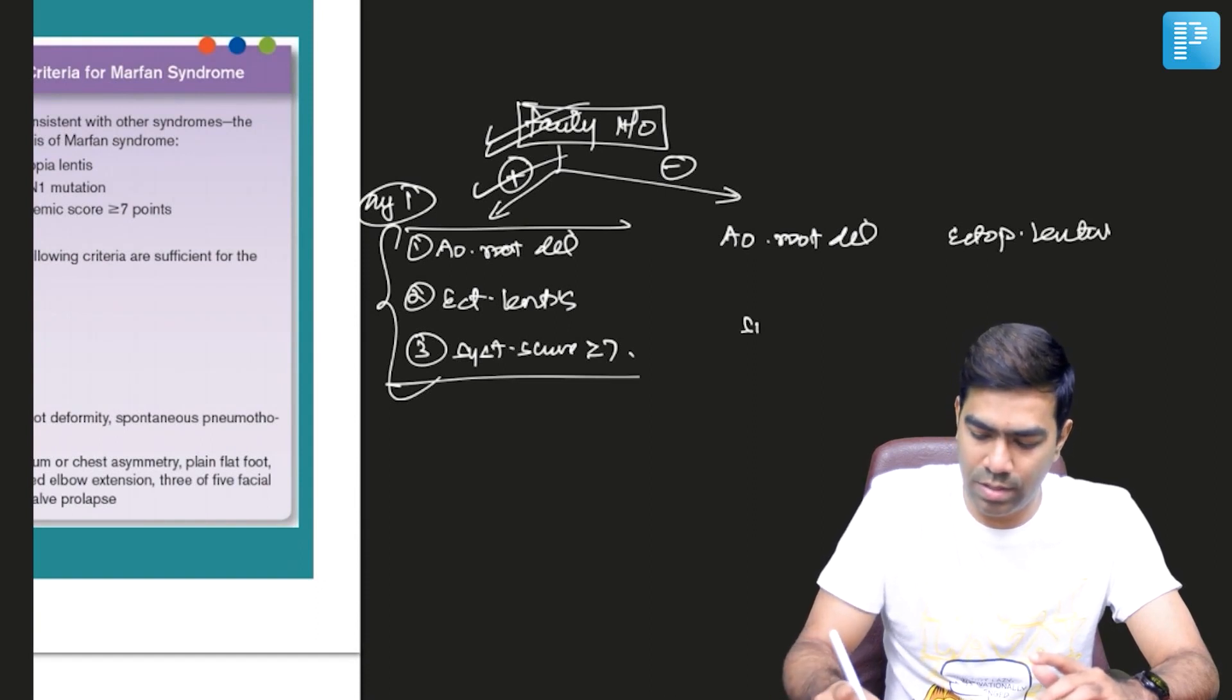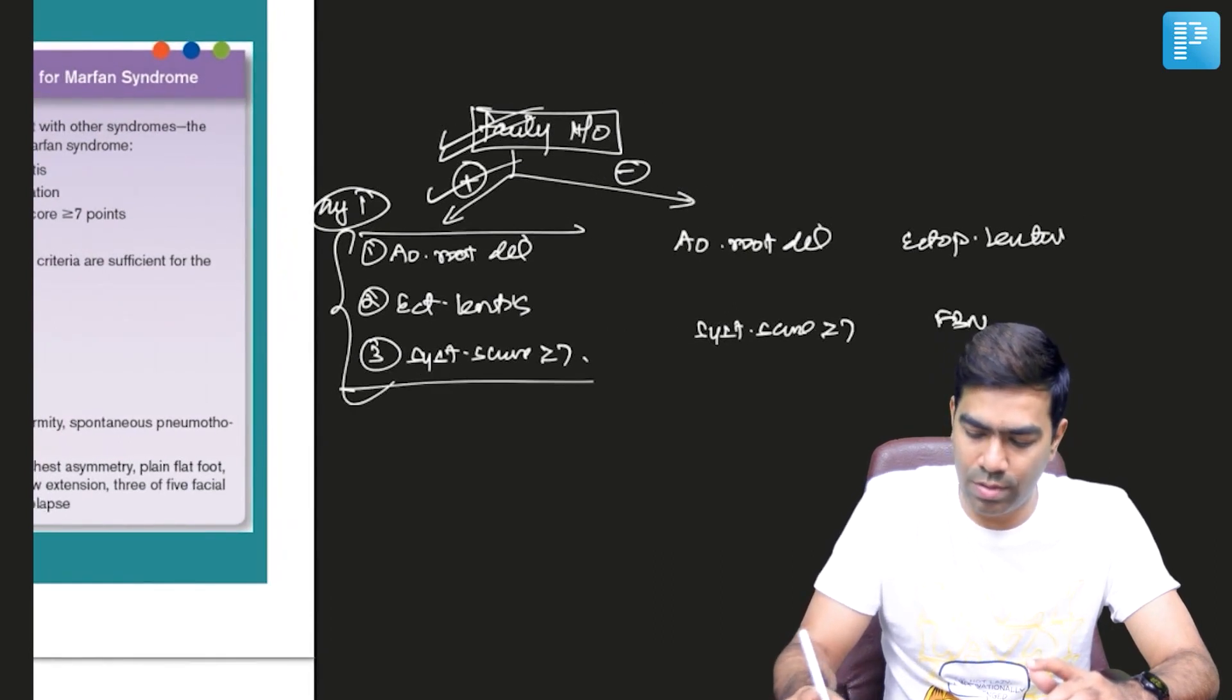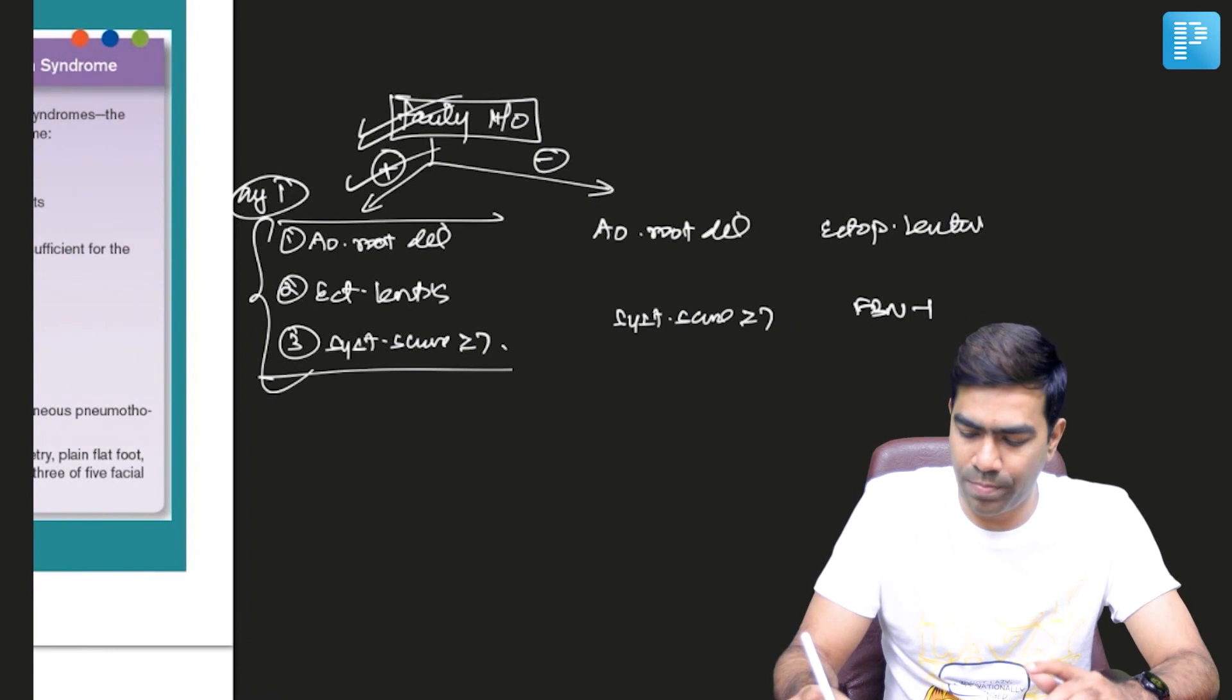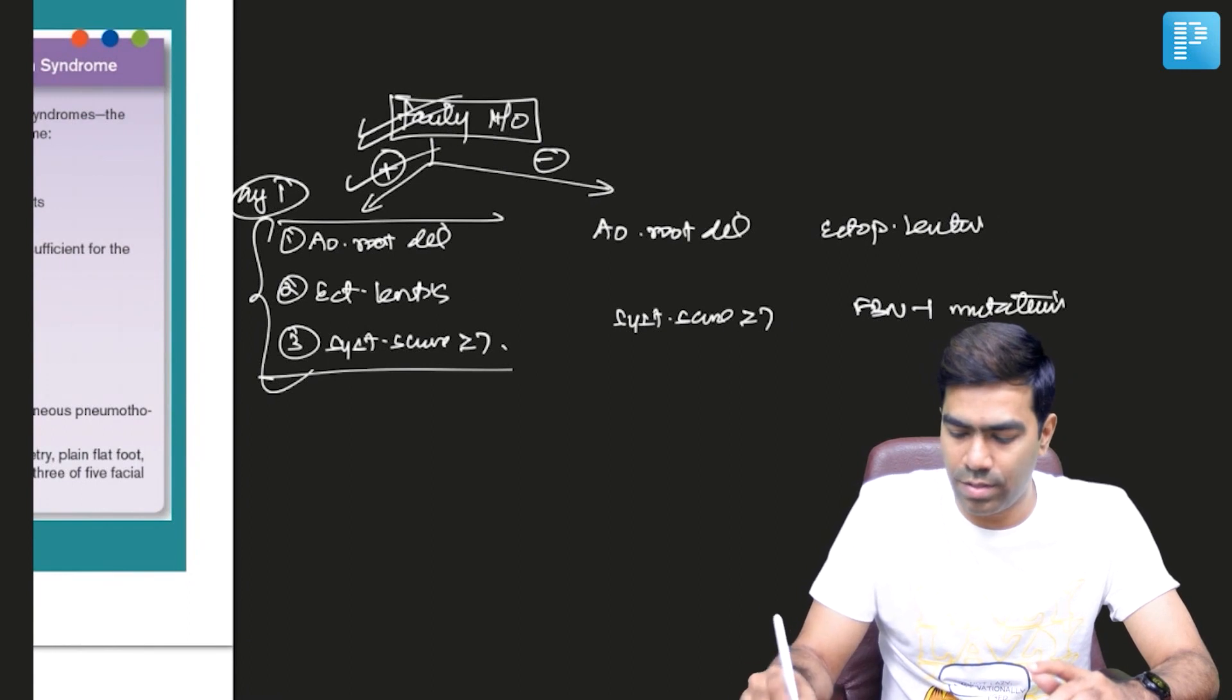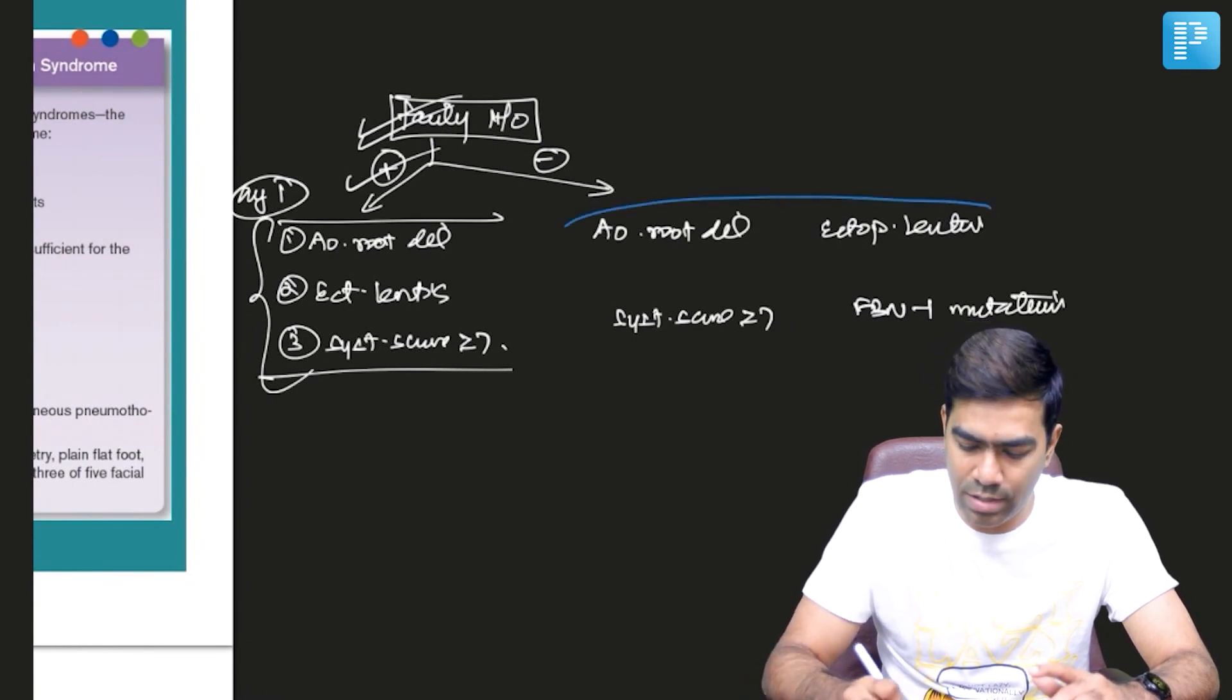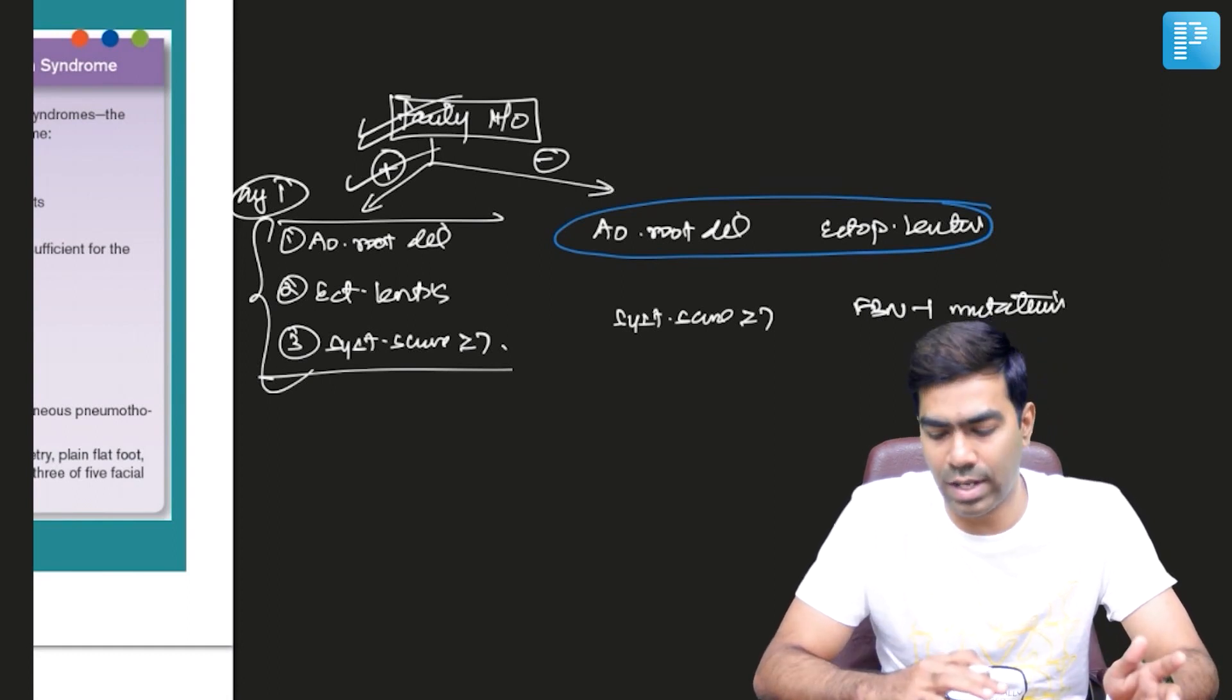...third is systemic features as defined by systemic score ≥7, and fourth is fibrillin-1 gene mutation. If you have aortic root dilatation with ectopia lentis, you can diagnose Marfan syndrome according to revised Ghent criteria.